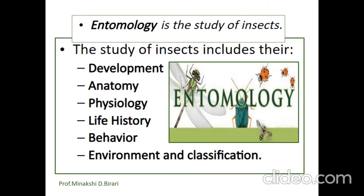The study of insects covers how the growth of insects occurs, their anatomy, physiology, life history, behavior, environment and classification of insects. All these topics are included in the study of insects, which is related to entomology — the branch of science for the study of insects and their relationship to humans, the environment and other organisms.